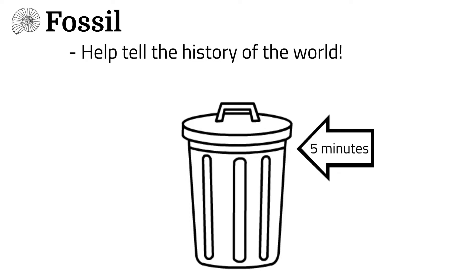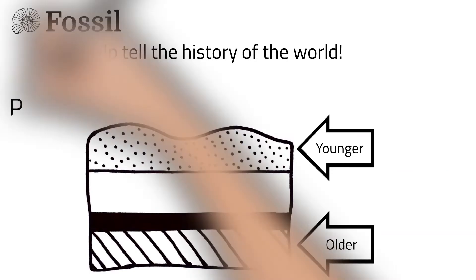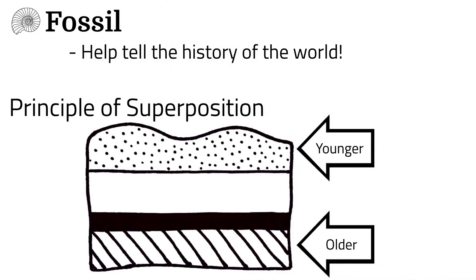Scientists use this same idea to figure out relative ages of rocks and fossils. Older layers will be on the bottom and younger on the top. This is called the principle of superposition.